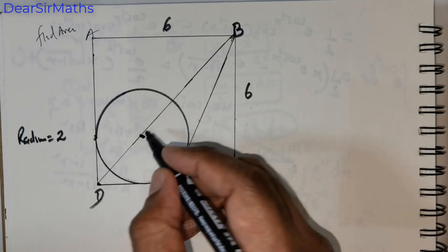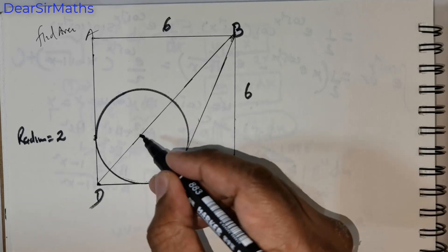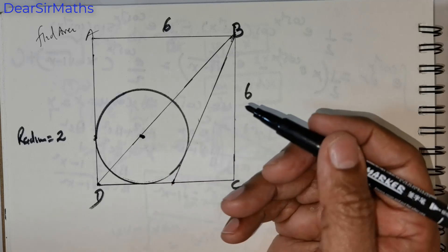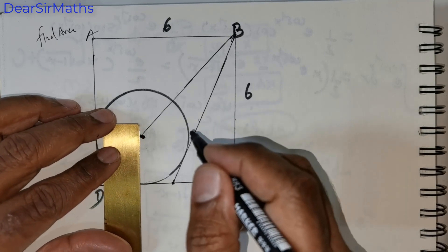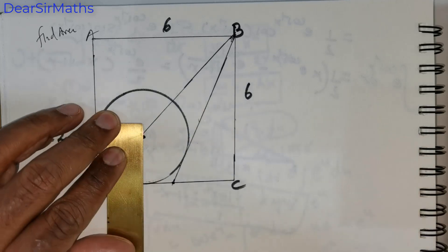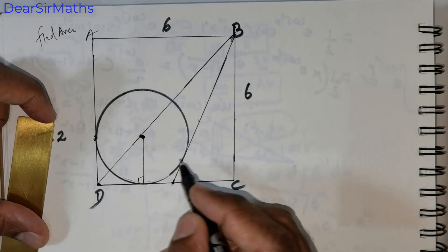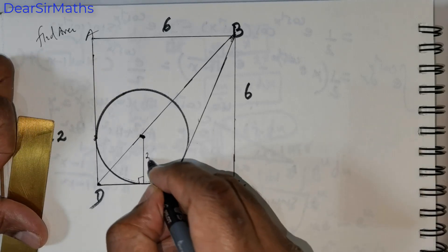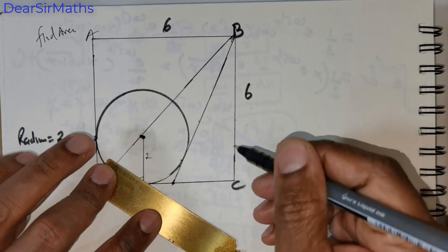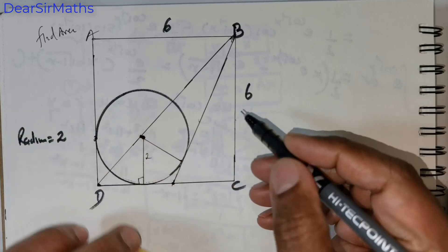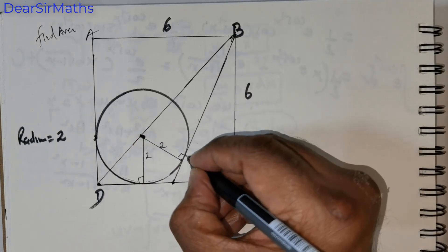If you were to drop a line from the circle center to the tangent, that would make an angle of 90 degrees, and that would also be the radius. So this is 90 degrees and this is the radius — 2 units. If I stretch this and connect this point to the tangent here, that would also be the radius, so this is 2 units and this angle is 90 degrees.